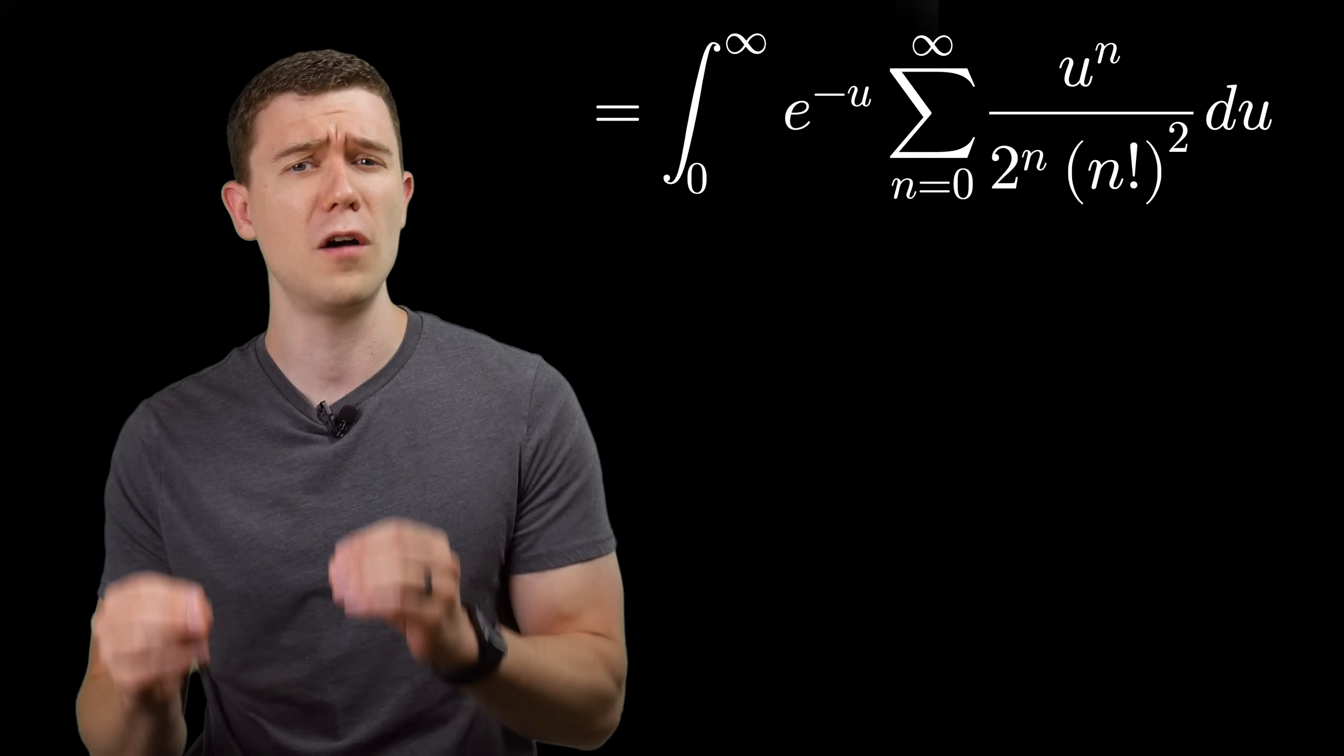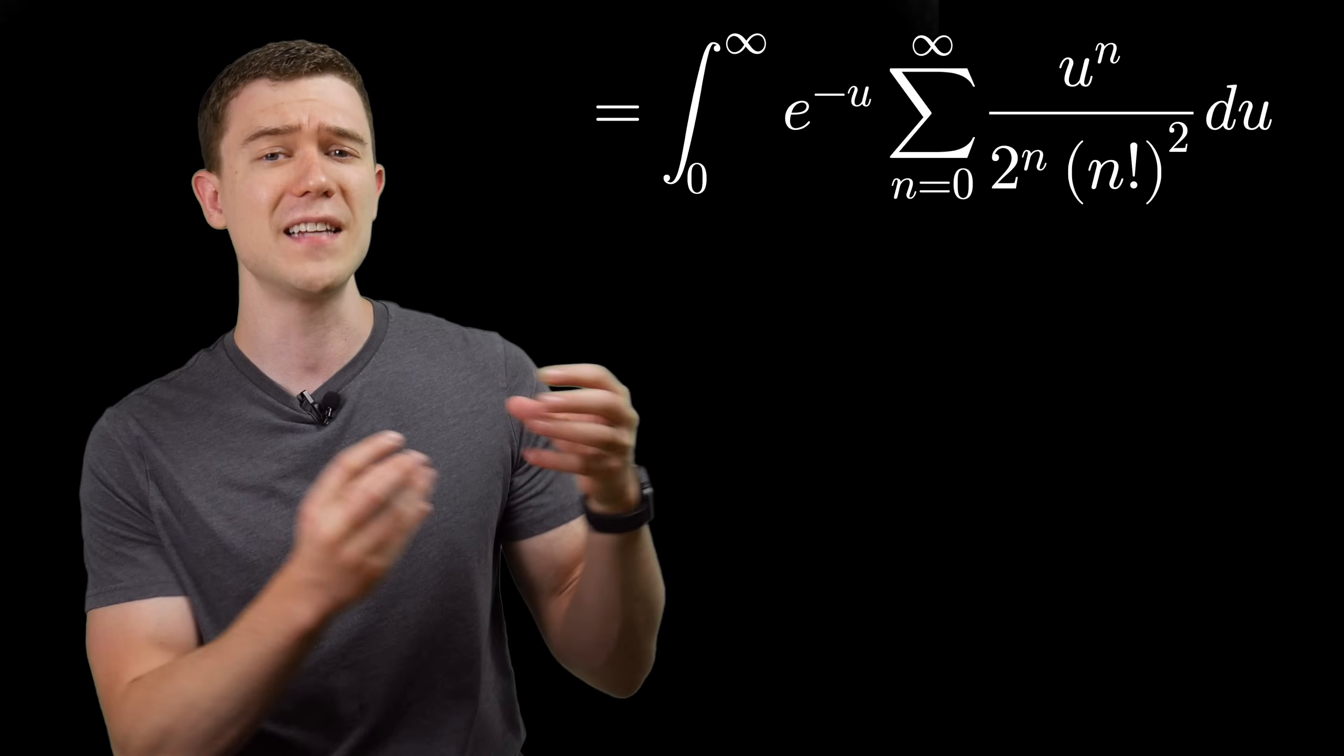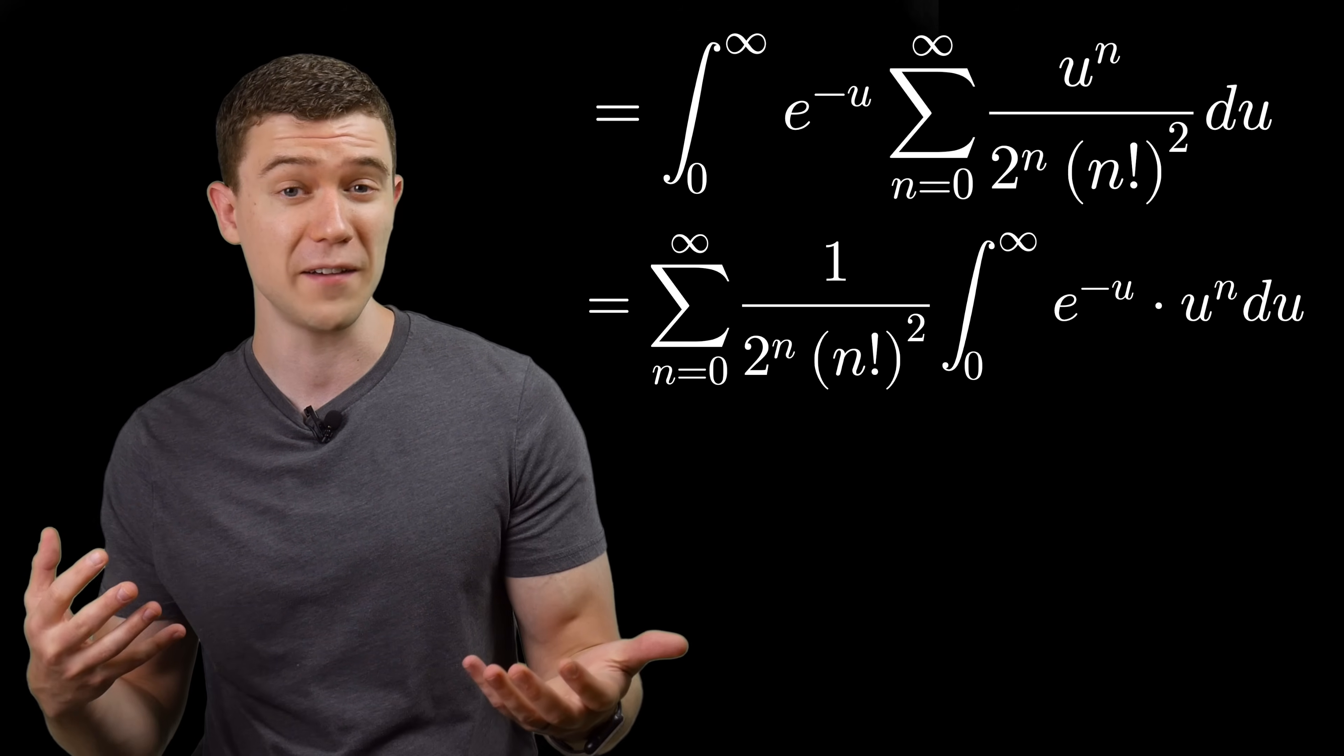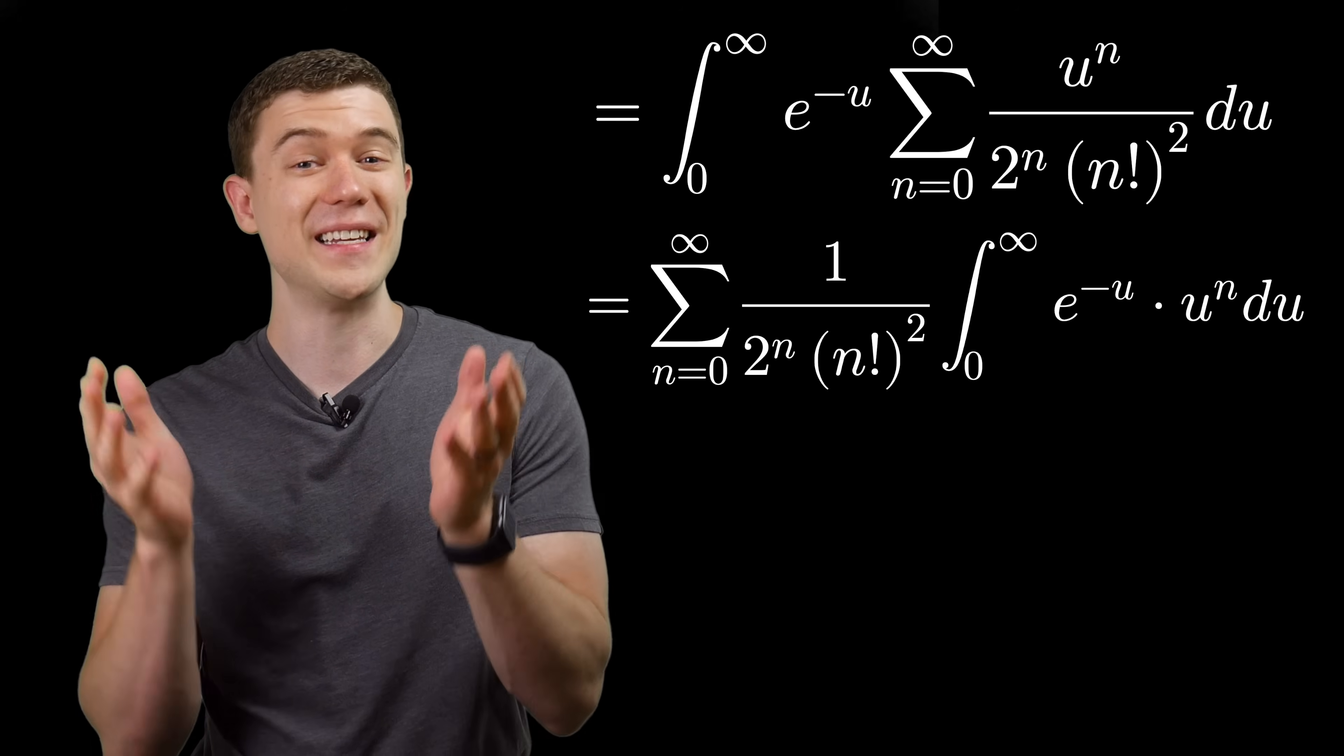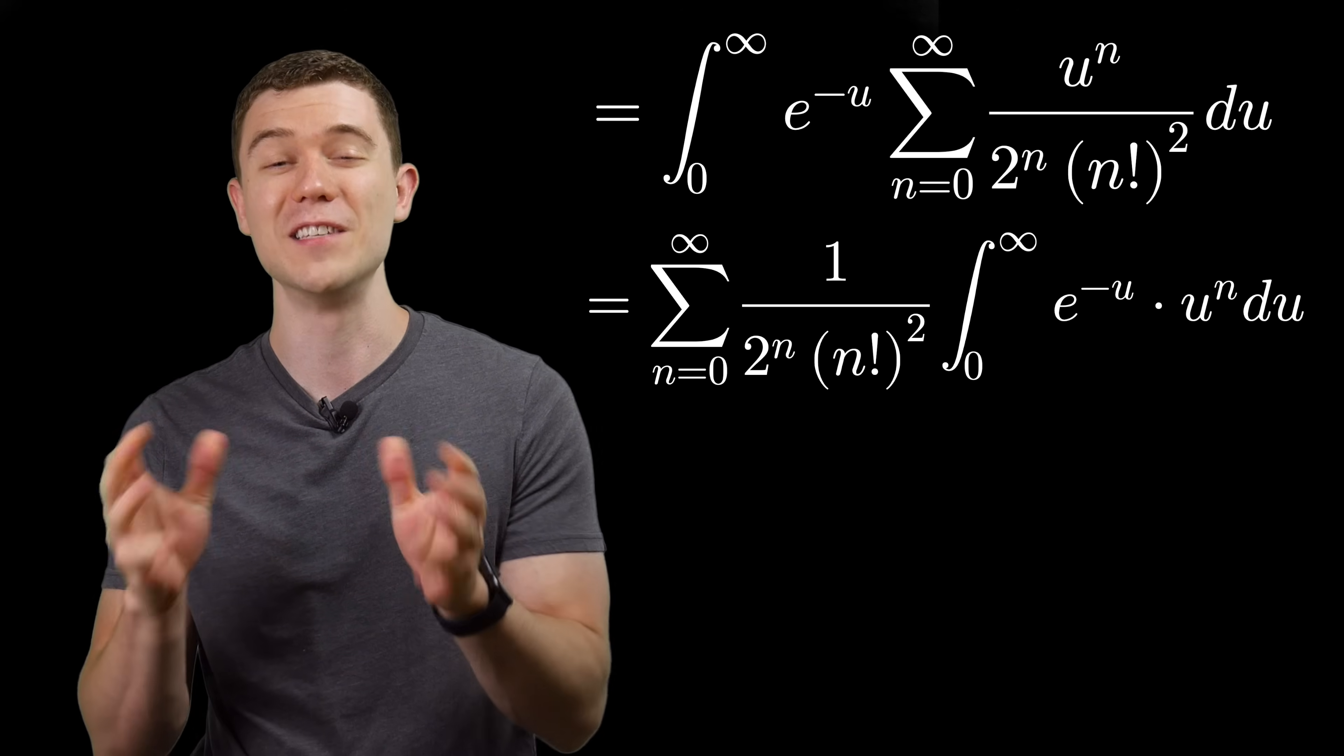Now, something that often happens with these types of problems, let's take that infinite sum and anything that doesn't have a u attached outside the definite integral. In terms of the definite integral, if there's no u, it's just a constant. Now, our job is to integrate this. And if you've seen other videos on my channel, you know that this is one of my favorites.